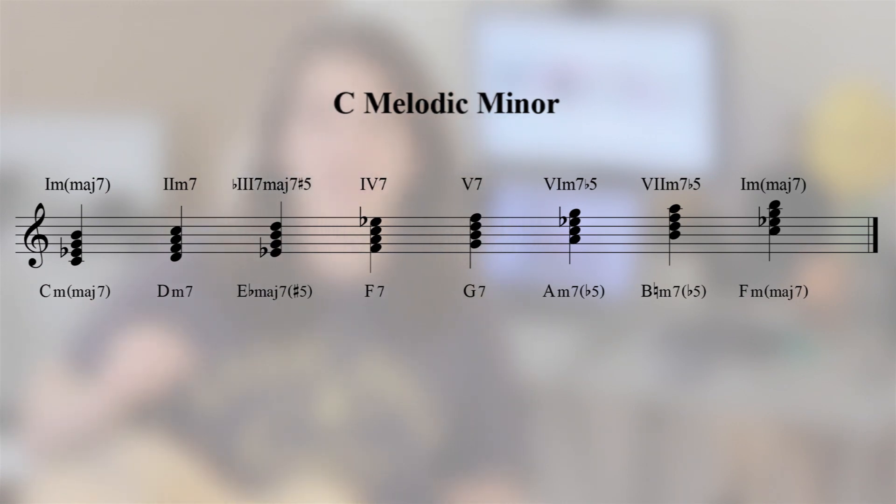Another way in which the melodic minor scale is used is to create tension over a dominant chord that will be resolved up a fourth. A dominant chord used in that way in a piece of music is referred to as a functioning dominant. So take for instance the common 2-5-1 chord progression in C major — that's D minor, G7 and C.